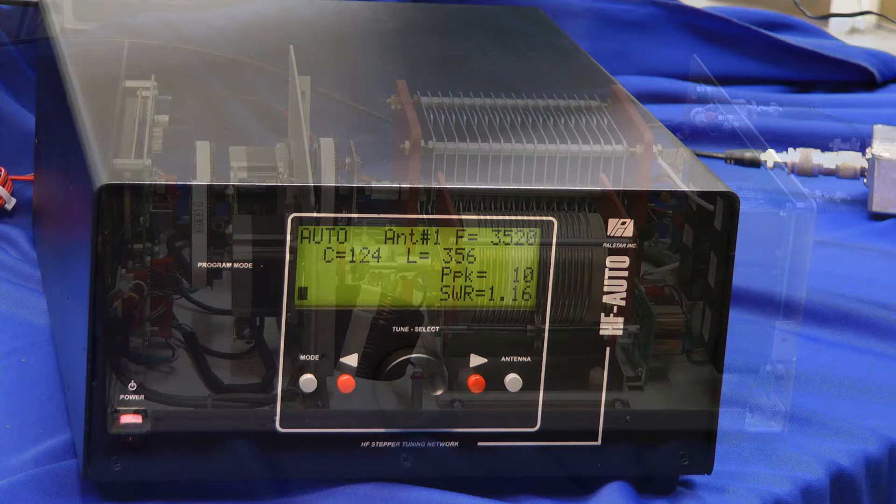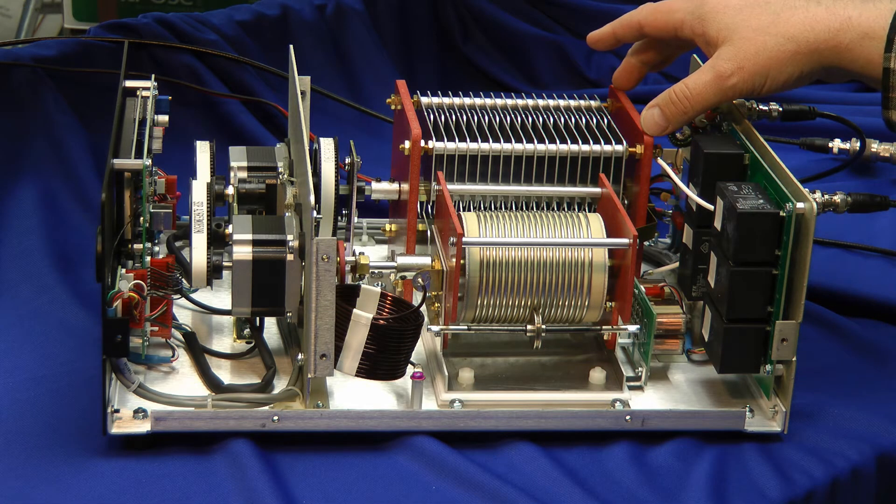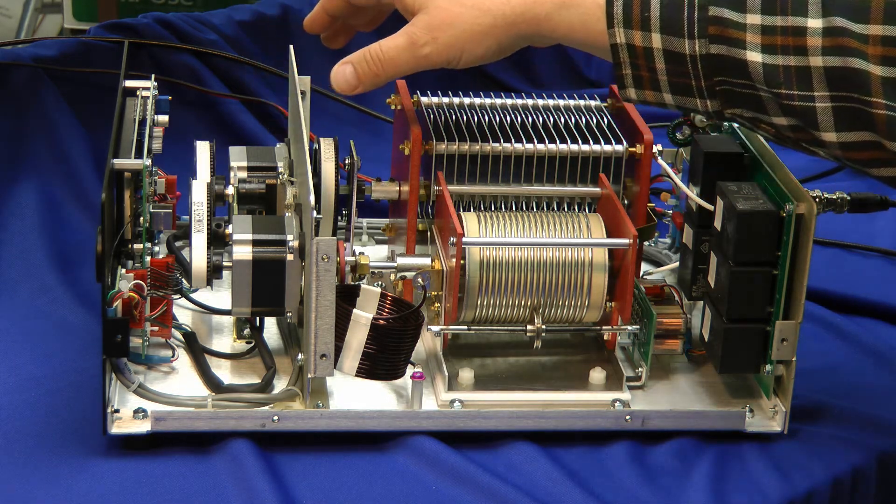Now let's take a look inside. Well, here it is. Impressive looking roller inductor and differential capacitor. In the front part we have the motors, the step motors that actually drive these. In front of that is a control module here.